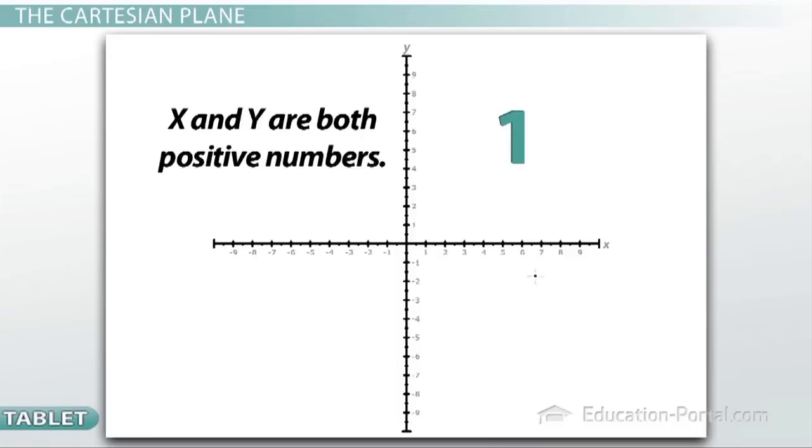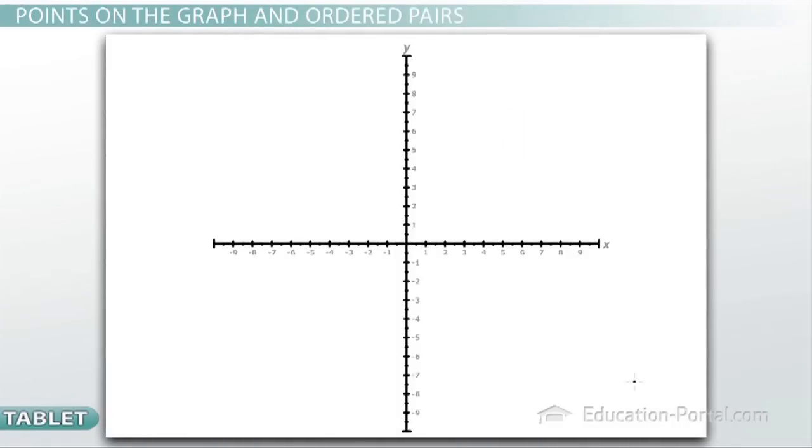What we can now do is pick any point on this Cartesian plane and label it with what's called an ordered pair. For example, I could pick the points right here.